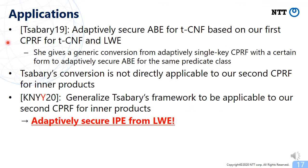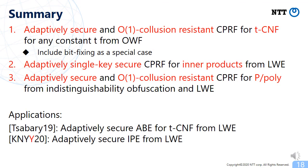Finally, I would like to introduce several applications of our constructions. After uploading the initial draft, Tsabary used our first construction to construct adaptively secure ABE for T-CNF. She gave a generic conversion from adaptively secure CPRF to adaptively secure ABE assuming certain properties of the underlying CPRF. Unfortunately, her conversion is not directly applicable to our second CPRF because it doesn't satisfy that condition. In recent follow-up work, we generalize Tsabary's framework to be applicable to our second CPRF, and as a result we obtain adaptively secure ABE from LWE, which had been open for almost a decade. Thank you for your attention.